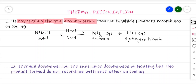The ammonia and HCl recombine with each other to give solid ammonium chloride back. That is where the process becomes reversible — the reactant ammonium chloride decomposes to give NH3 and HCl, and when they recombine, we get solid ammonium chloride once again. Another example related to this is PCl5, phosphorus pentachloride.